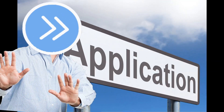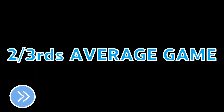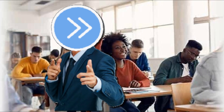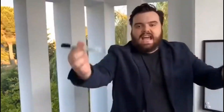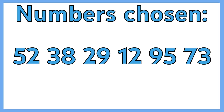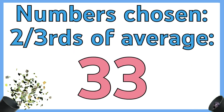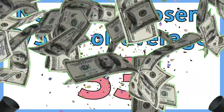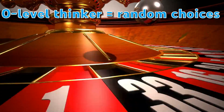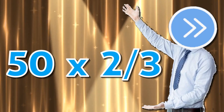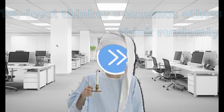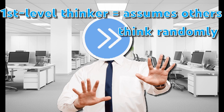The biggest application of this is the two-thirds average game. In this game, you are sitting in a room with 49 other people. All of you are given the task to choose a number from 1 to 100, and the people who get closest to two-thirds of the average of all numbers chosen get a huge reward. If people choose randomly, like a zero-level thinker, the average would be around 50. So the winner would be closest to 50 times two-thirds, which is 33. A first-level thinker would choose this answer.